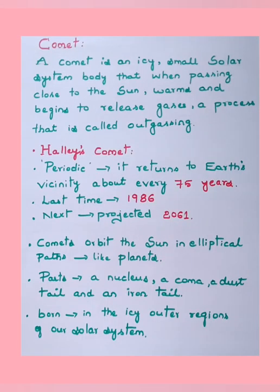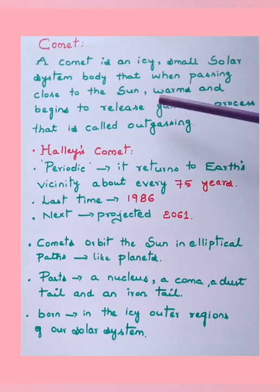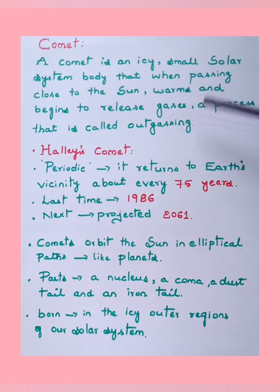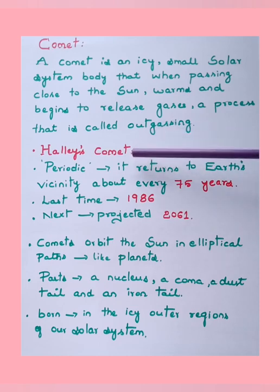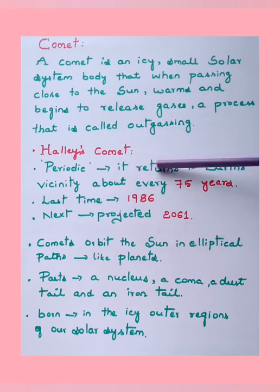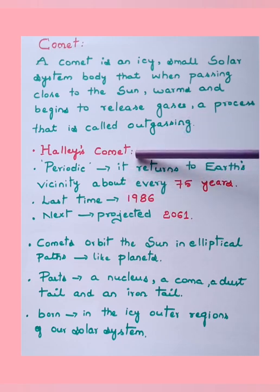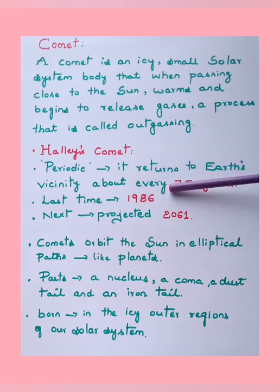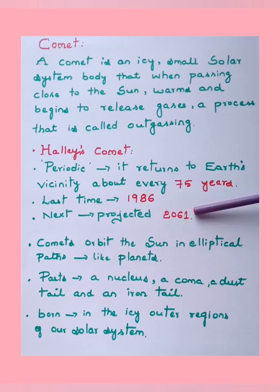A comet is an icy small solar system body that, when passing close to the sun, warms and begins to release gases — a process called outgassing. One special comet is Halley's Comet. It is a periodic comet that returns to earth's visibility approximately every 75 years. It was last visible in 1986 and is next projected to be visible in 2061.